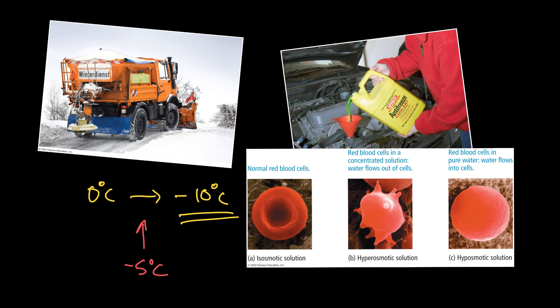Conversely, if we put it into a very dilute solution, so that means the solution the red blood cell is in has a low solute concentration, or if you like a high water concentration, diffusion will cause that high water concentration to move in through the red blood cell, the outside of which is essentially a semipermeable membrane, and the red blood cell will plump up and be a lot bigger than normal.